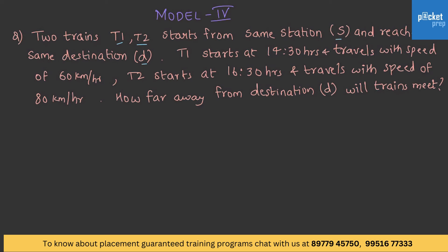T1 starts at 1430 hours and travels with a speed of 60 kilometers per hour. T2 starts at 1630 hours and travels with a speed of 80 kilometers per hour. How far away from the destination will the trains meet?